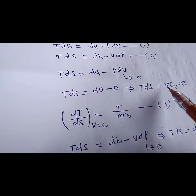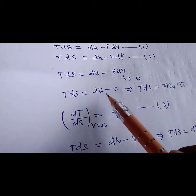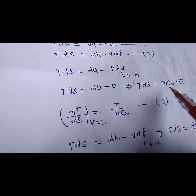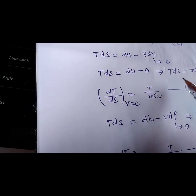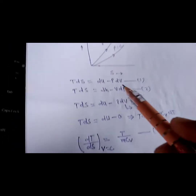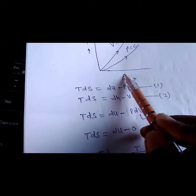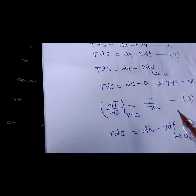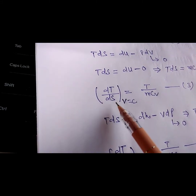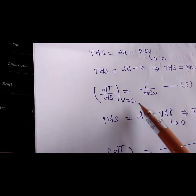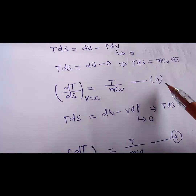Since internal energy can be written as dU = m·CV·dT, we get TdS = m·CV·dT. The slope of the constant volume line is dT/dS at constant volume, which equals T divided by m·CV.